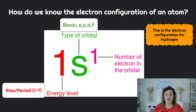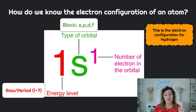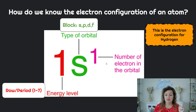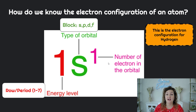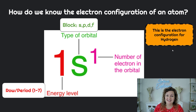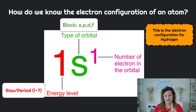The letter that comes after this is the type of orbital that you have, and we only have four types: S, P, D, and F. And then the small superscript number that you write after your orbital is gonna be the number of electrons that you have in that particular orbital. So if I was writing 1s1, this would actually just be for hydrogen — it's in the first period, it's in the S block, and hydrogen only has one electron.